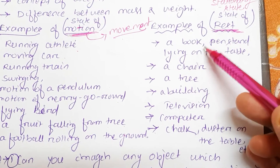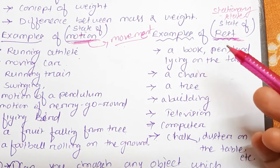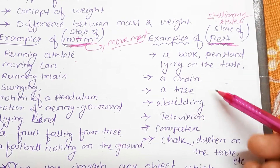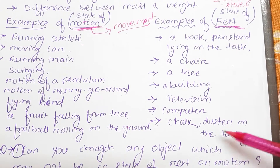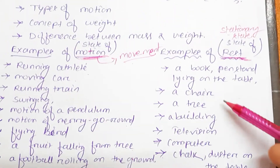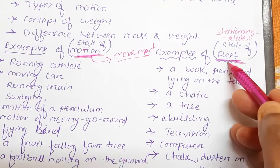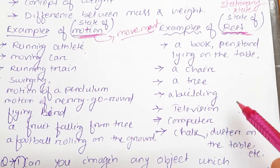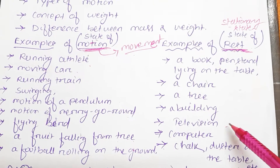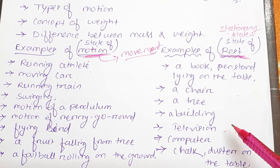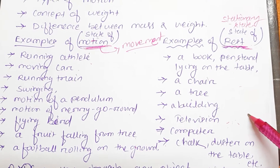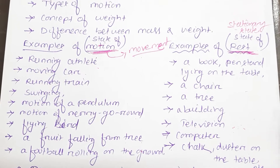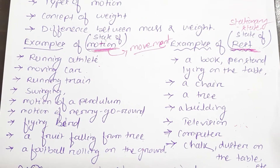Examples of state of rest include: a book lying on a table, a pen stand, a chair, a tree, a building, a television, a computer, chalk, and dust on the table — all these things are at the state of rest or stationary state. Unless an external force is applied to those objects, they will not change their position.